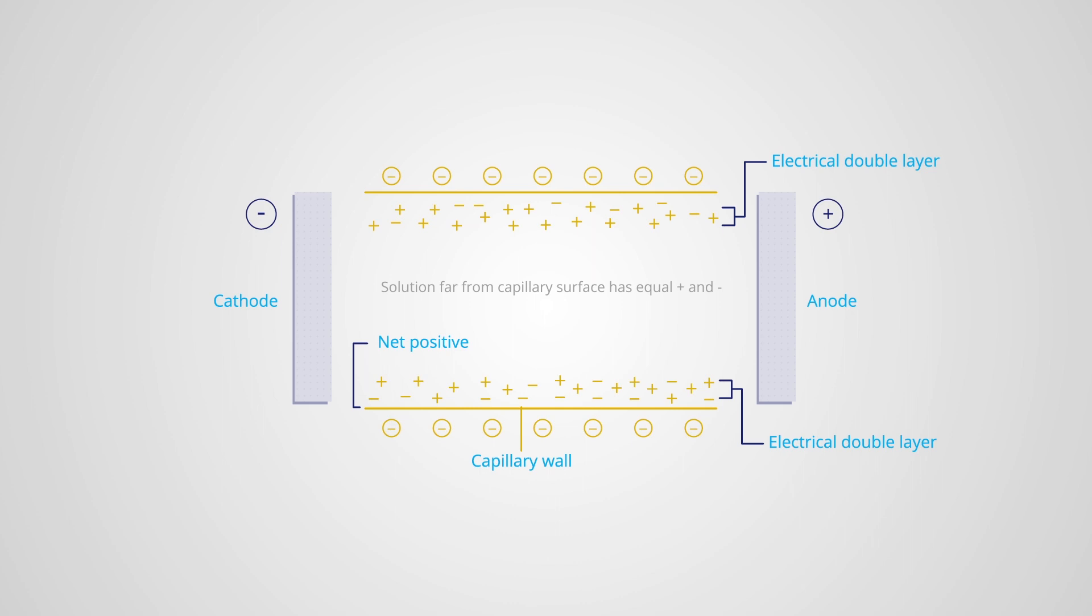In the presence of the applied electric field, this surplus of positive charge at the sides of the capillary will be attracted to the cathode. Solution in the center of the capillary is dragged along in the same direction, and the overall flow is called the electroosmotic flow.